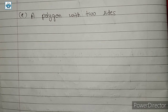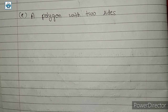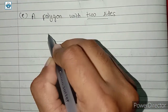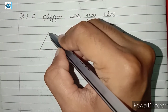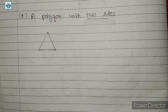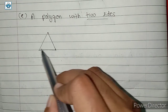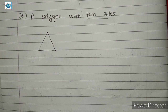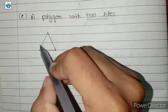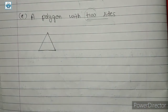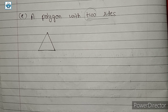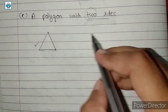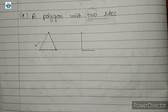Sub-question C — a polygon with two sides. For any figure to be a polygon, it must be closed. If it has only two sides, then it is not possible to close it. The smallest number of sides which make a closed polygon is three — a triangle. We need at least three sides for a closed figure. Therefore, it is not possible to draw a polygon with two sides.